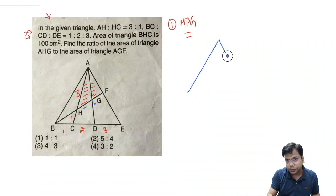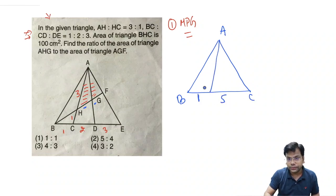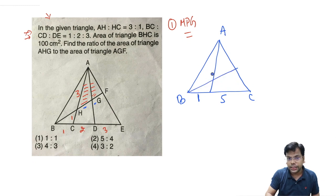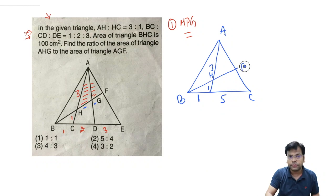First of all, use the mass point geometry in triangle ABE. This one is A, B, E. We know this one is 1, the entire is 5. We are applying the mass point geometry with 3 and 1. So this point is H, this point is F. The maximum data given is here.